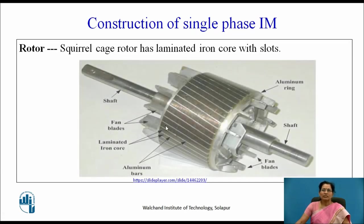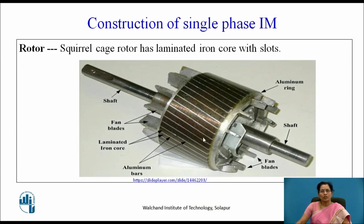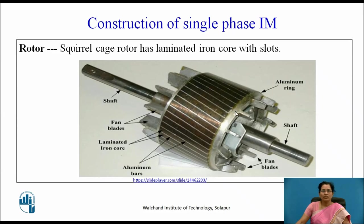The squirrel cage rotor has a laminated core with slots. The aluminum bars are placed in those slots. A laminated iron core is there, and the fan blades are there. This is the shaft, and an aluminum ring is provided at the end of this rotor. Due to that, all these aluminum bars are connected together to make a closed path on the rotor — these end rings or aluminum rings are provided.